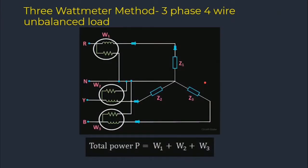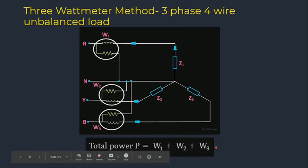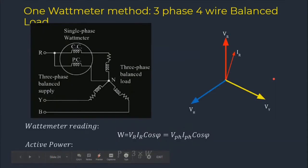In the three wattmeter method for a 3-phase 4-wire system, the fourth wire is the neutral wire. According to Blondel's theorem, three wattmeters W1, W2, W3 are needed. W1 is connected between R and N, W2 between Y and N, and W3 between B and N. The total power equals W1 + W2 + W3.